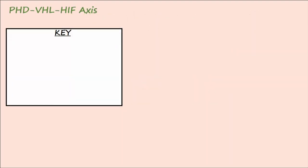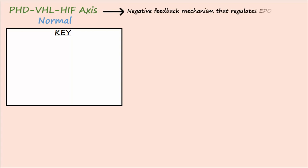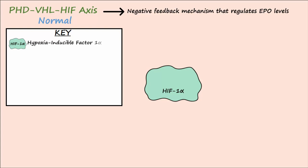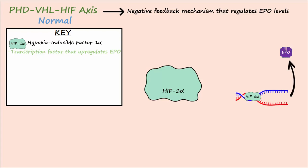To understand the mutations that lead to these types of polycythemia, let's discuss the normal healthy PHD/VHL/HIF axis, which makes up a negative feedback mechanism that regulates EPO levels based on tissue oxygenation. Hypoxia-inducible factor 1-alpha, abbreviated HIF-1-alpha, is located in all nucleated cells and normally acts as a transcription factor to upregulate the expression of genes that code for EPO.